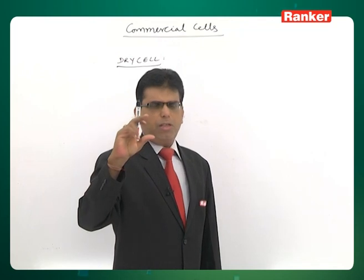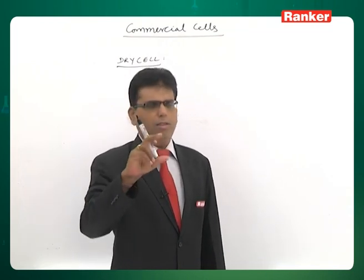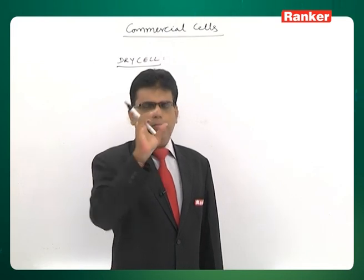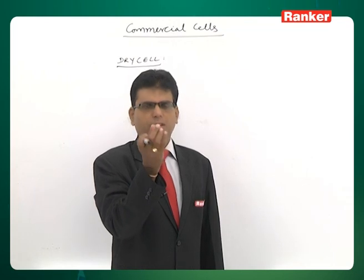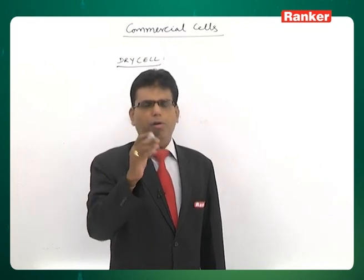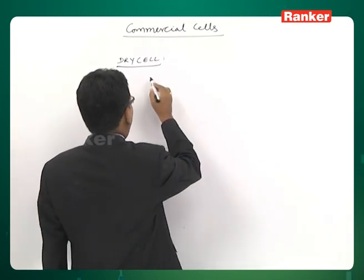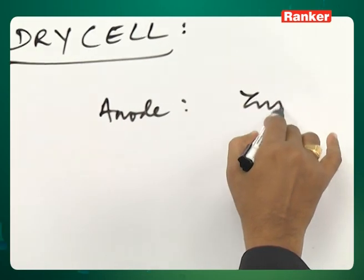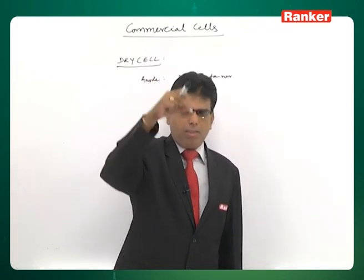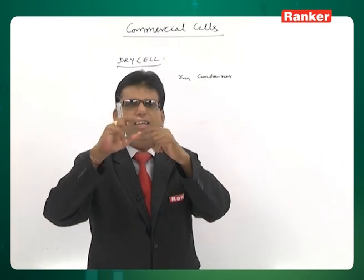The dry cell is used in transistors, radios, and torch lights — commercially known as Eveready and Nippo batteries. It consists of a gray-colored cylindrical zinc container, which is the anode. At the middle is a steel-tipped graphite rod that runs to the bottom of the vessel — that is the cathode.